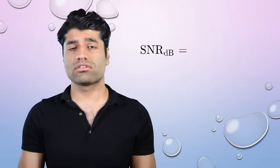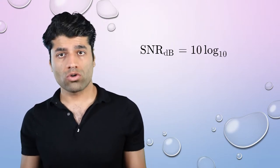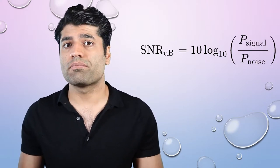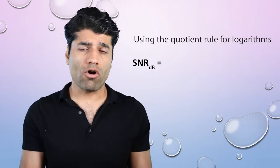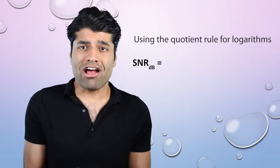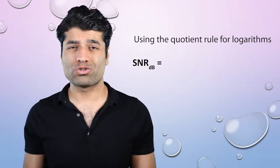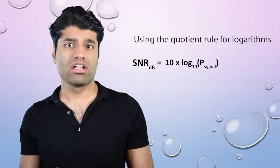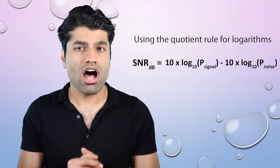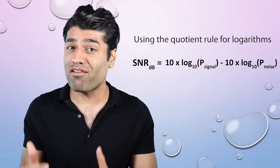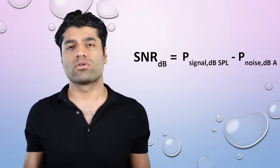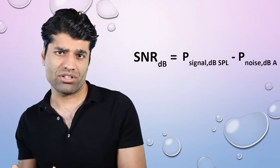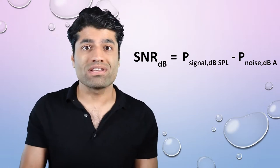A logarithmic decibel value is equal to 10 times log base 10 of the power of the signal in watts divided by the power of noise in watts, which is equivalent to the power of signal in decibels minus 10 times log base 10 of the power of noise in watts. In other words, SNR in decibels is equal to the power of signal in decibels minus the power of noise in decibels.